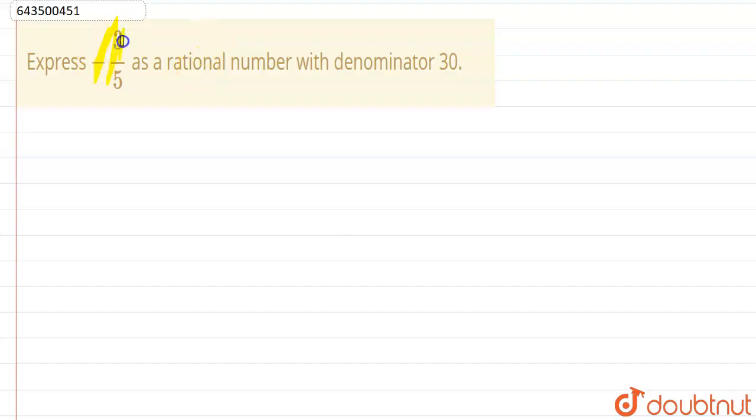Hello students, in this question it is given that we need to express this rational number as a rational number with denominator 30. We need 30 in the denominator, right?